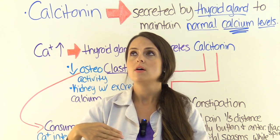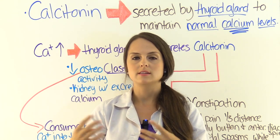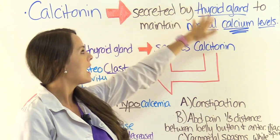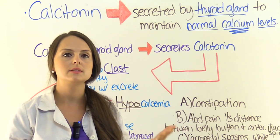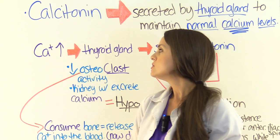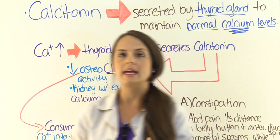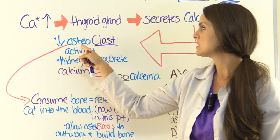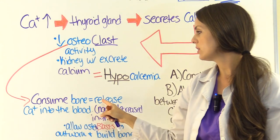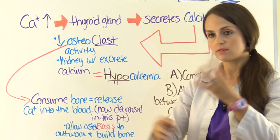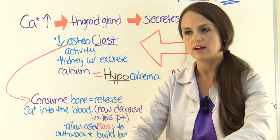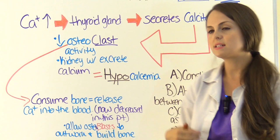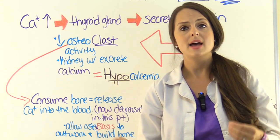With osteoporosis — for instance, if the patient is postmenopausal with low estrogen levels — this patient has been prescribed calcitonin. Calcitonin is naturally produced by our thyroid gland and helps maintain calcium levels. When calcium levels are high, the thyroid gland secretes calcitonin. What does calcitonin do? It decreases osteoclast activity — slowing down how those cells consume bone — because those cells break down bone and release calcium into the blood. We want to slow that down so osteoblasts can outwork osteoclasts, building up bone faster than we're breaking it down.